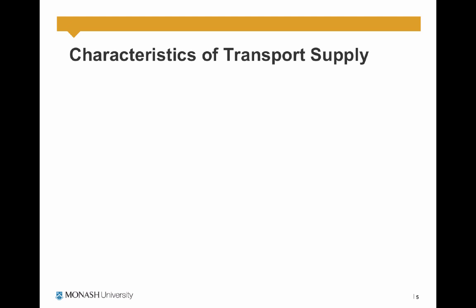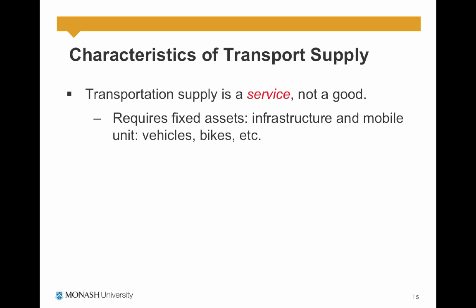What are some of the characteristics of transport supply? Transportation supply is a service, not a good. It requires fixed assets — infrastructure — and mobile units, being vehicles, bicycles, and pedestrians.